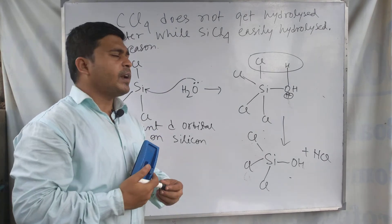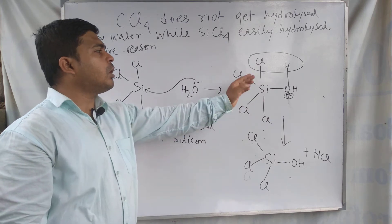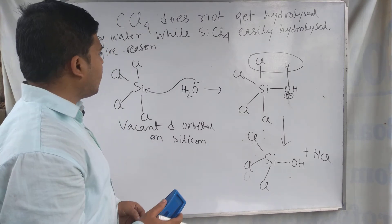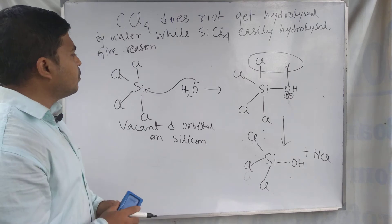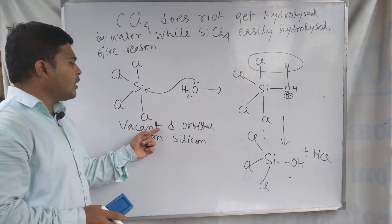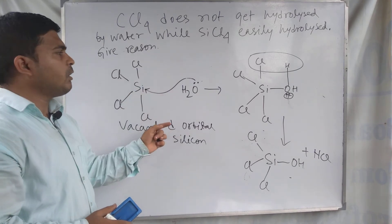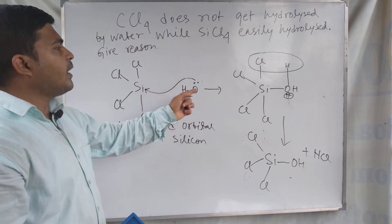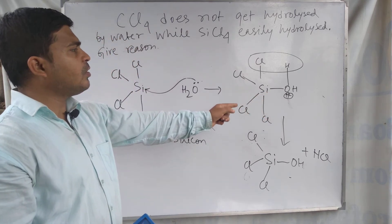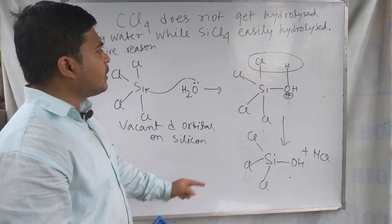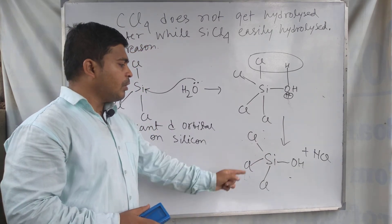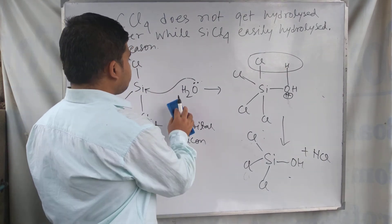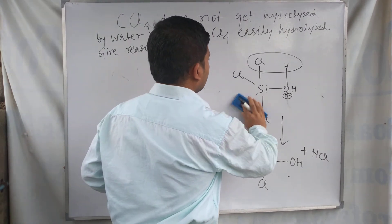Carbon tetrachloride has no vacant d orbital, and as a result it cannot form the first step of hydrolysis — the first step cannot be completed because of the absence of d orbitals on the carbon atom. In silicon tetrachloride, the silicon atom has vacant d orbitals, and due to their presence, in the first step water attacks and a 5-valency compound is formed, after which HCl is removed and SiCl3OH is formed.